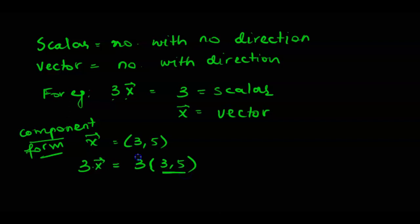That is the x vector representation and we do distributive property. 3 times 3 gives us 9, 3 times 5 gives us 15. So 3x vector is (9, 15).